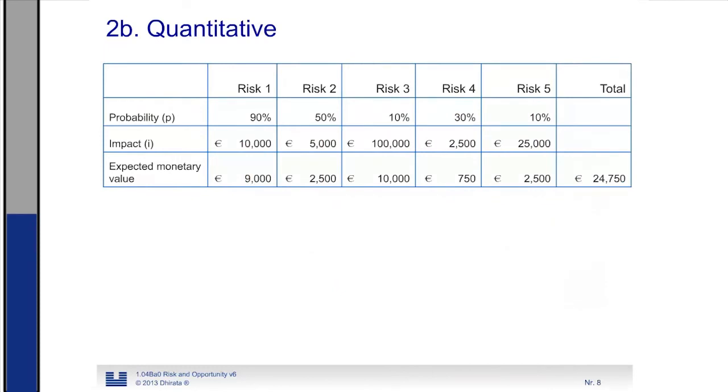Here I have written down an example of a quantitative analysis. We have five risks, risk 1, 2, 3, 4 and 5. And for each of them we have analyzed and we come to the conclusion that the probability is 90, 50, 10 or 30 and 10%. We also investigated the impact that it would have when this specific risk would occur. And then we calculate the expected risk value or the expected monetary value. And this is the probability times the impact. So here you see for the whole project 9,000, 2,500, 10,750 and 2,500.